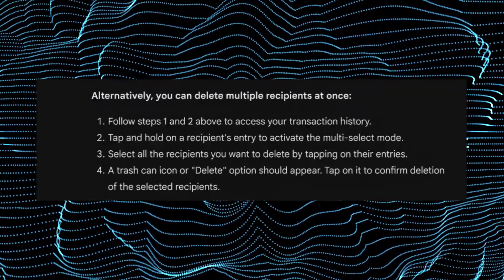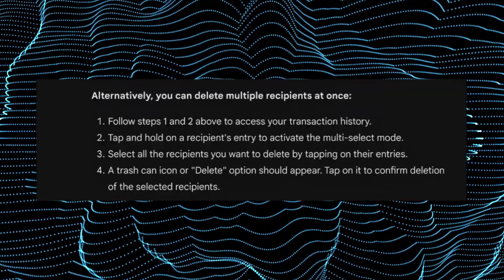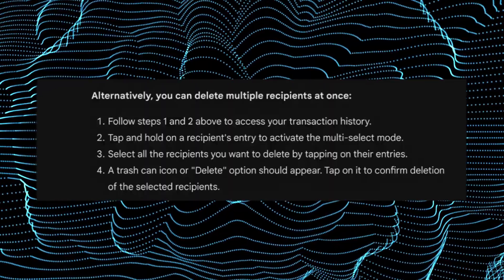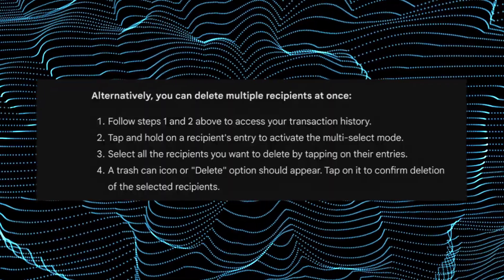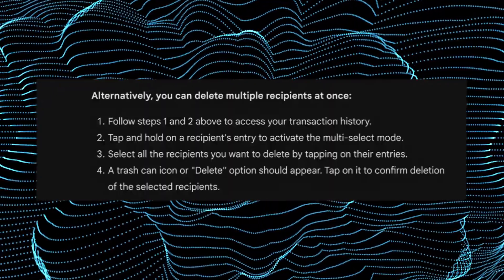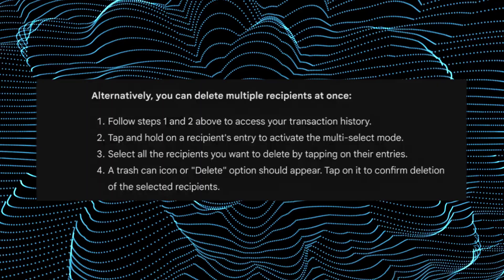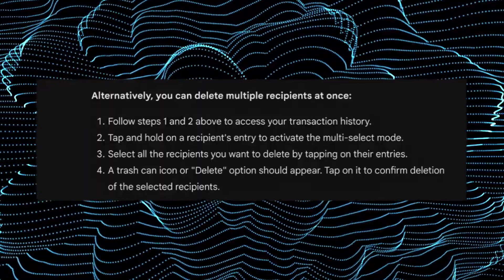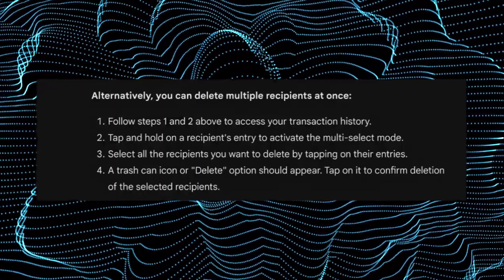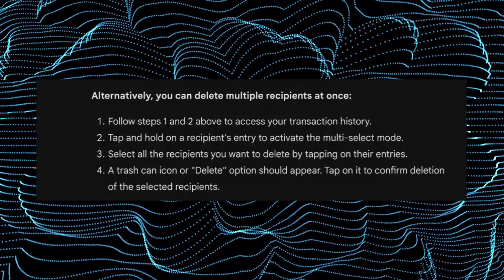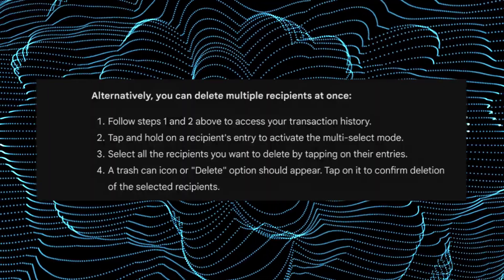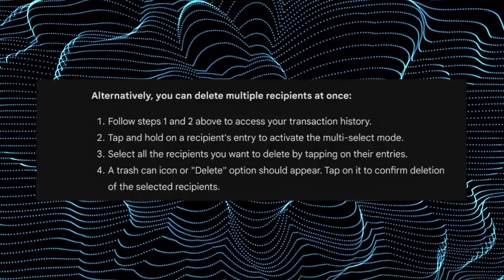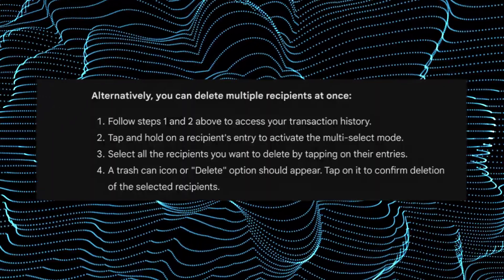Alternatively, you can delete multiple recipients at once. Follow steps 1 and 2 above to access your transaction history. Then tap and hold a recipient's entry to activate the multi-select mode.